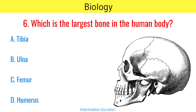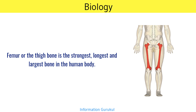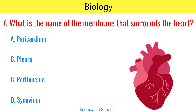Which is the largest bone in the human body? Femur. Femur or the thigh bone is the strongest, longest and largest bone in the human body. What is the name of the membrane that surrounds the heart? Pericardium.